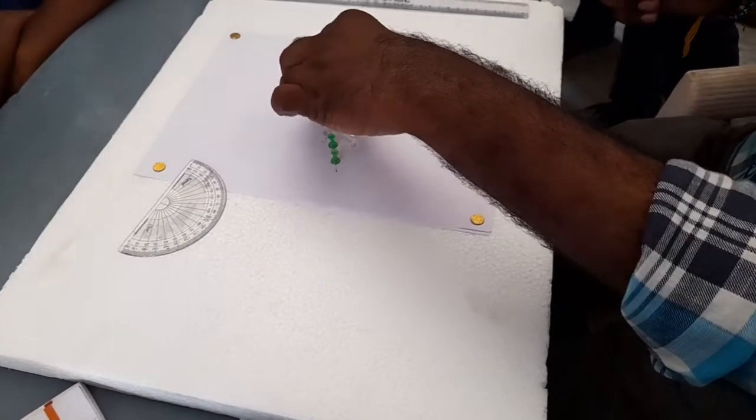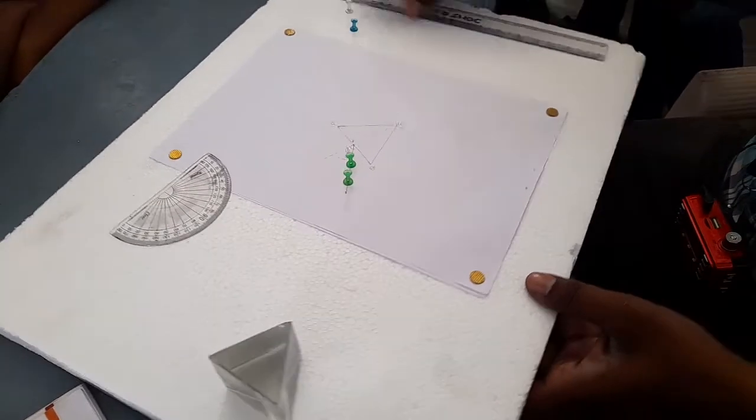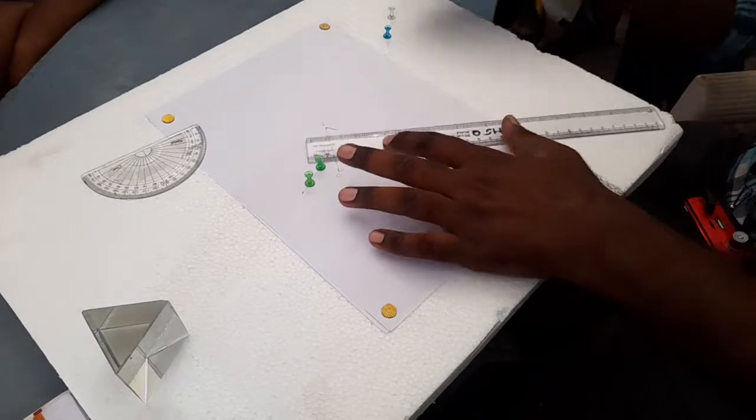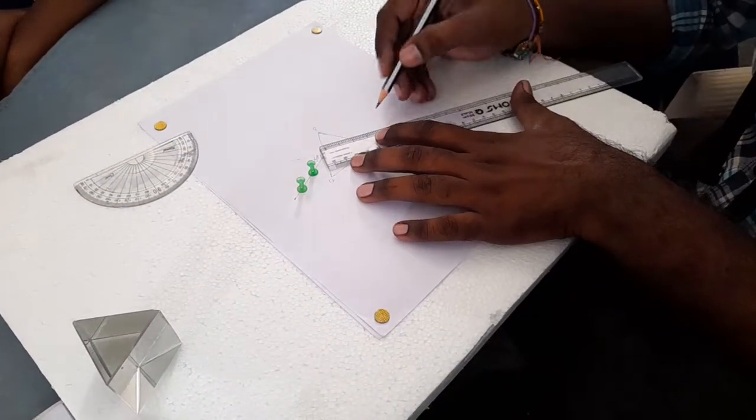Now I am going to remove all these prisms and pins carefully. So wherever the pins dipped, we need to draw a line joining these two pins, C and D.